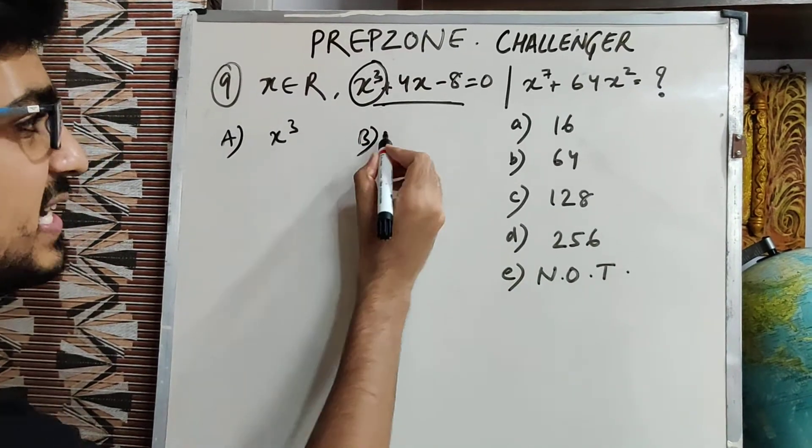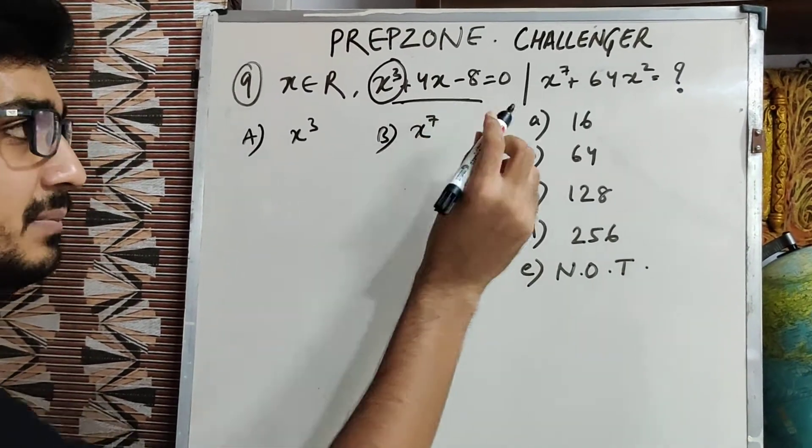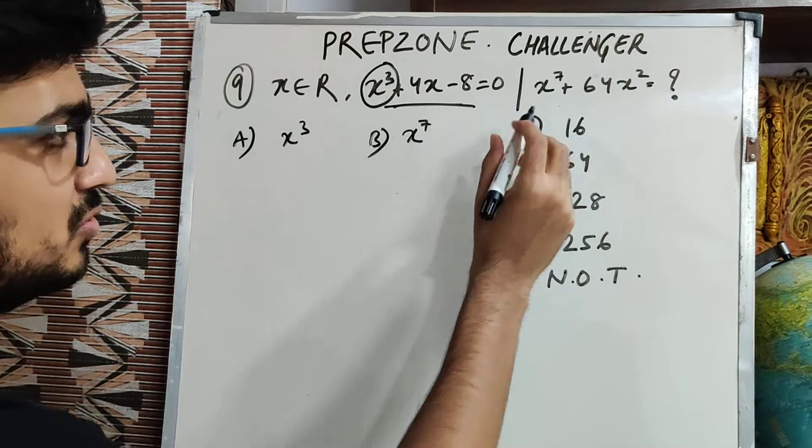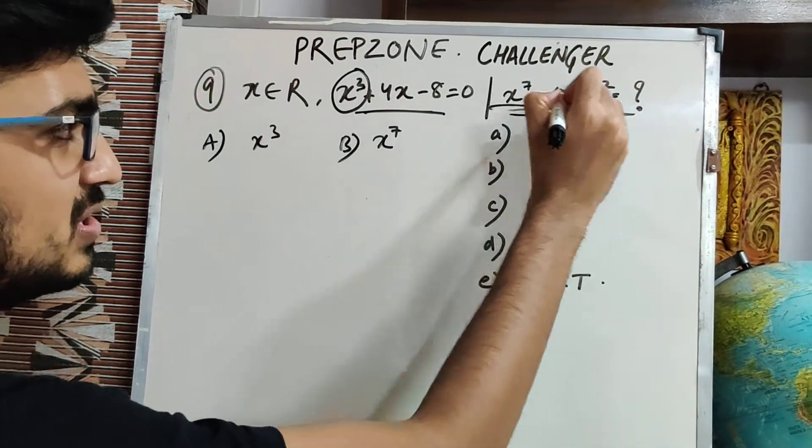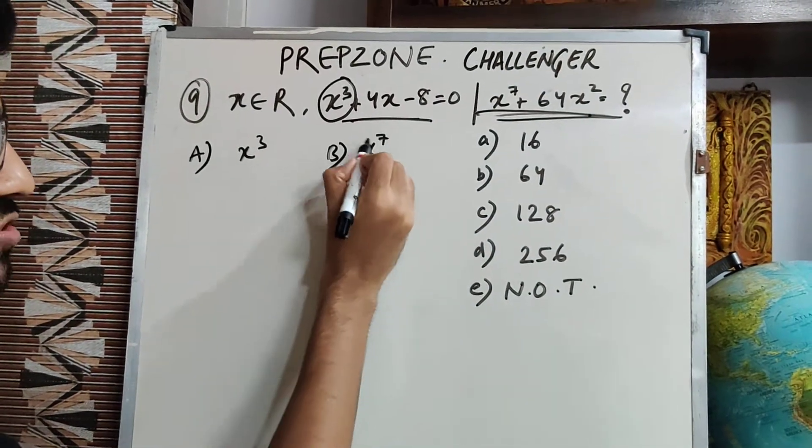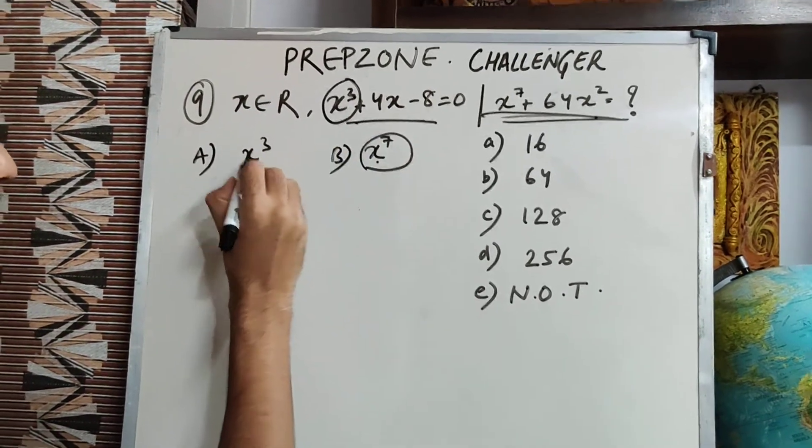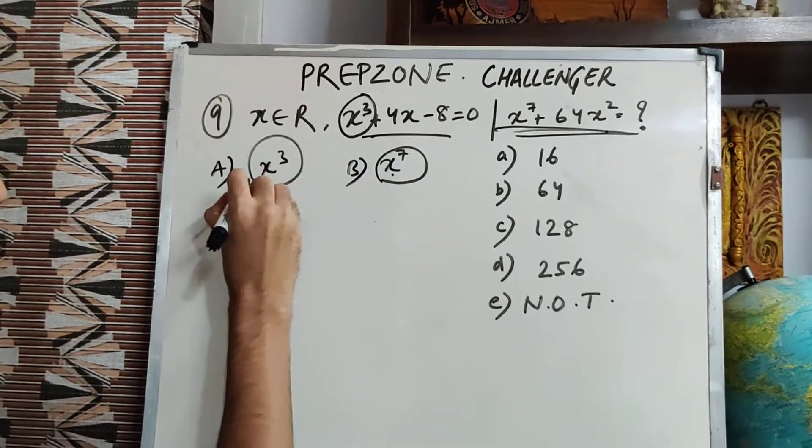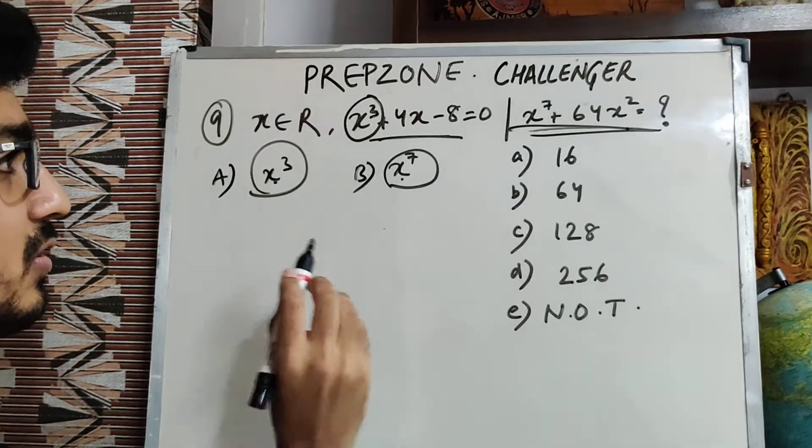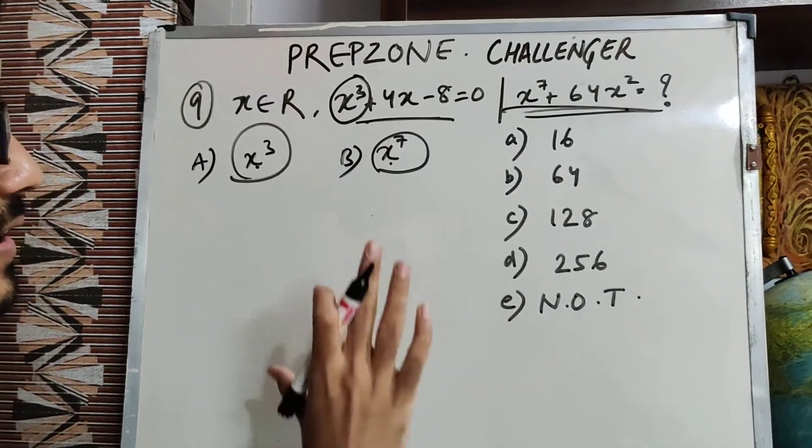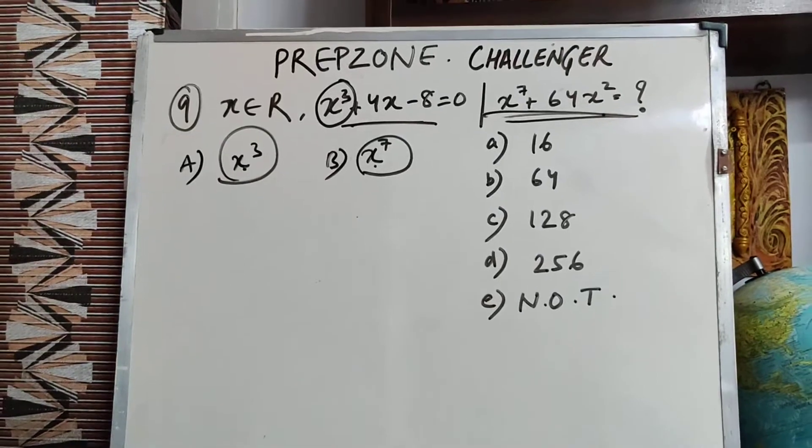And second part is: identify the maximum power of the term that you need to find out in the question. So you essentially need to find this expression. The maximum power is x⁷. So I am writing x⁷. And what is given? The given equation has maximum power x³. So the question asked needs to be expressed in terms of the equation given.